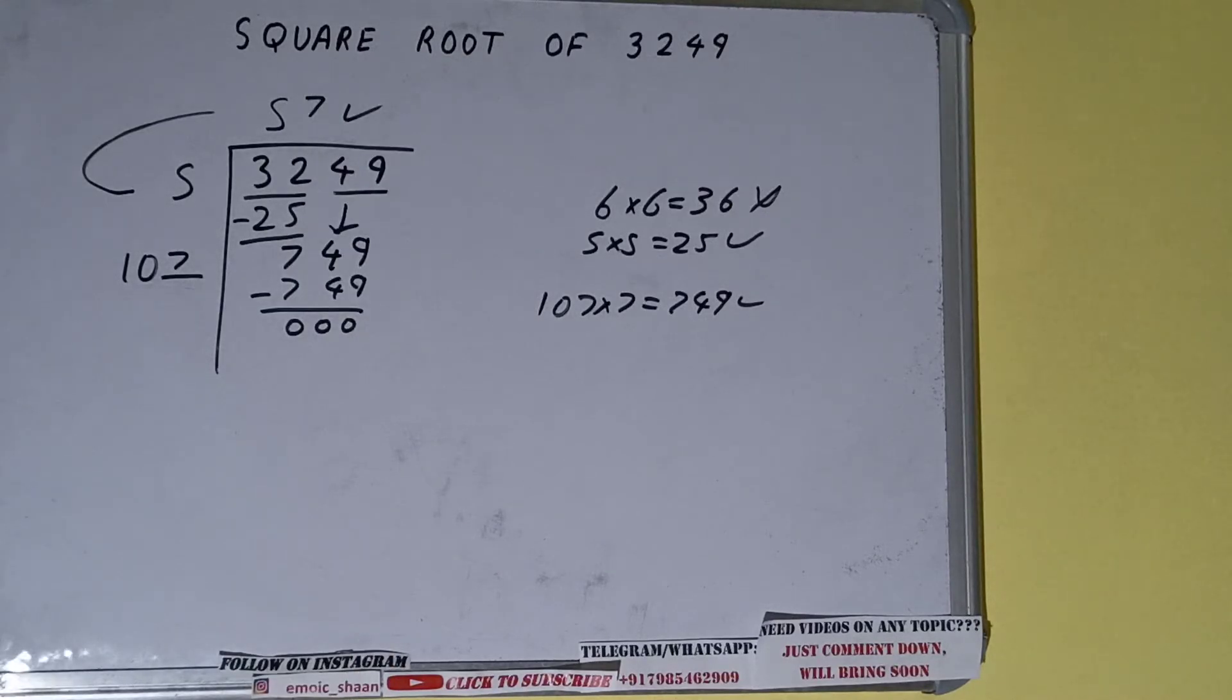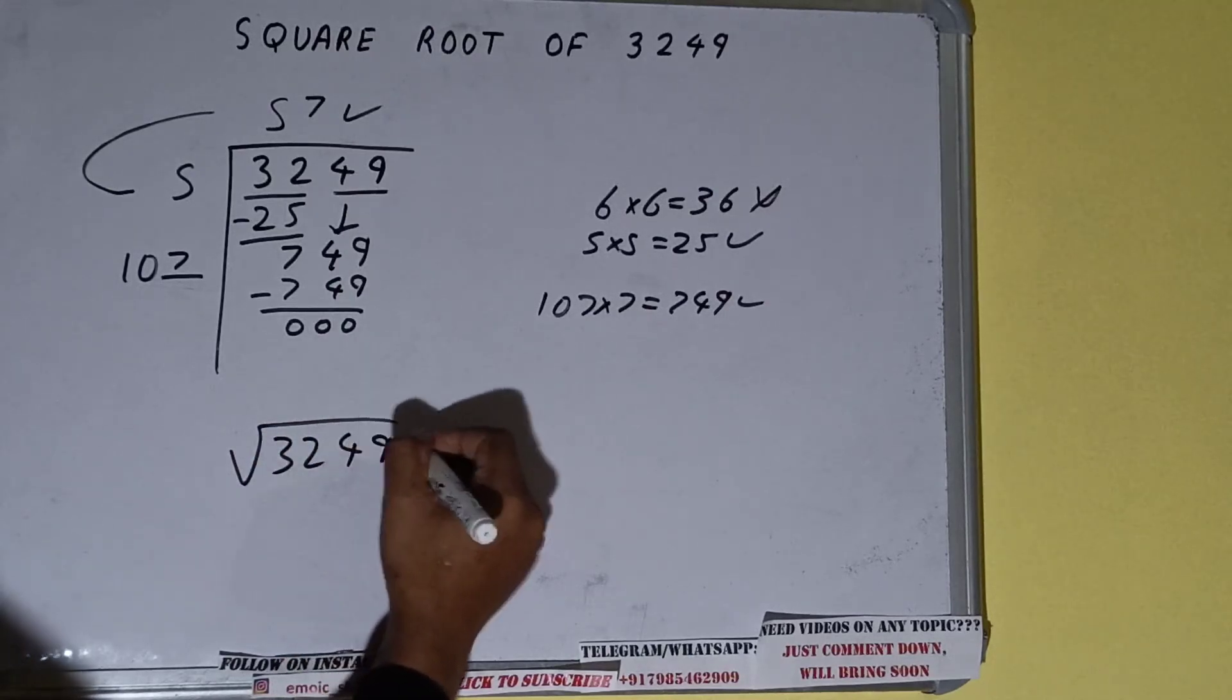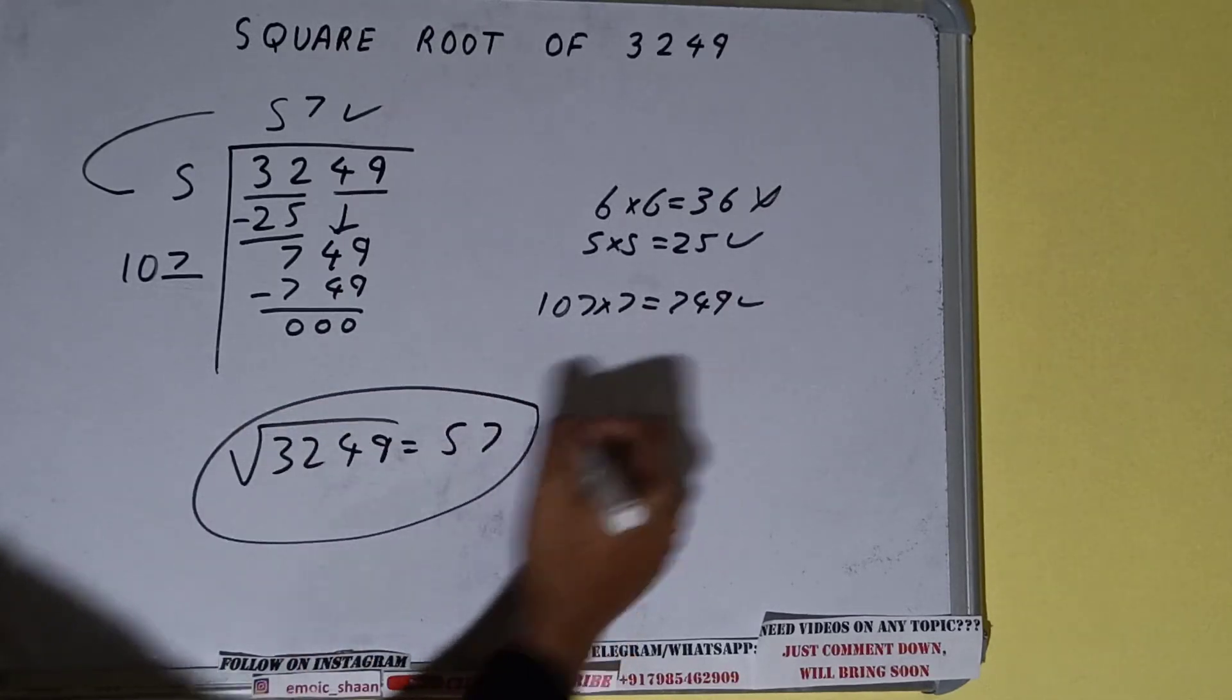So square root of 3249 will be 57. That's it.